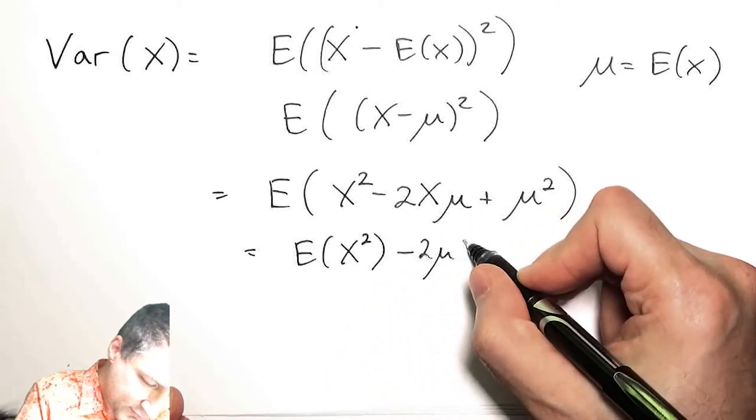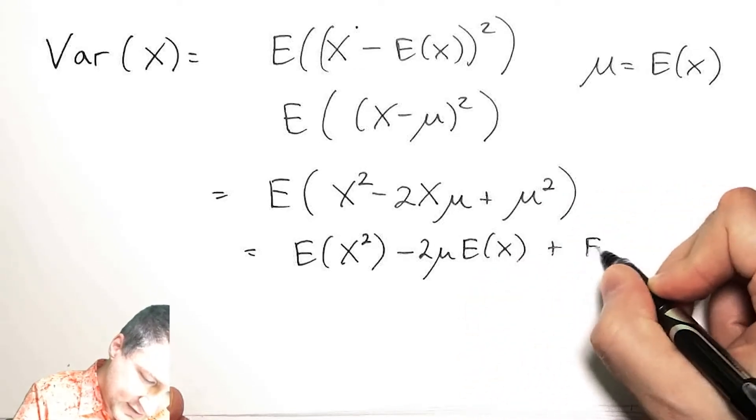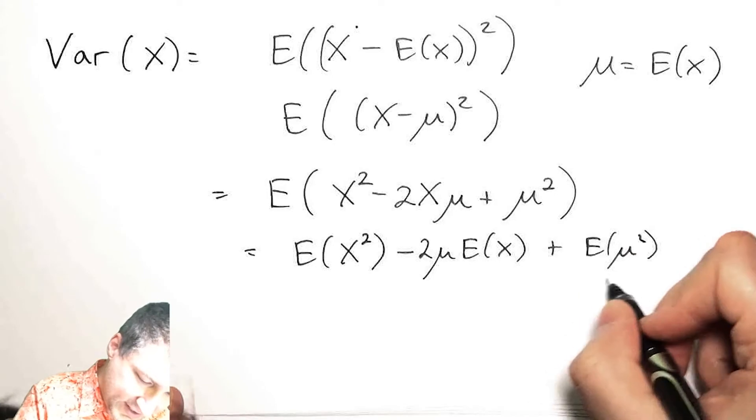So I have E(X squared) minus 2*mu*E(X) plus E(mu squared), which is just a constant, so I have mu squared.